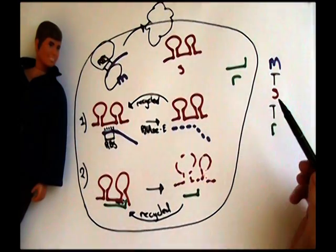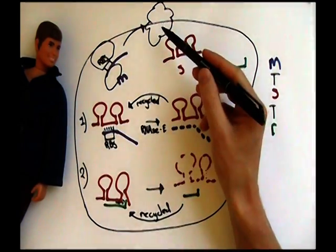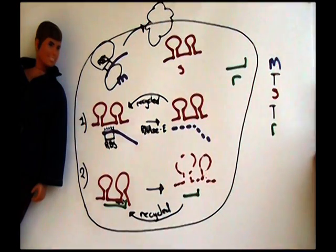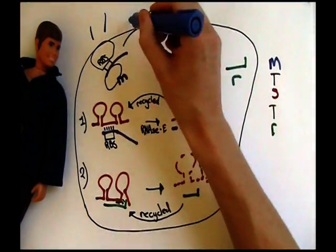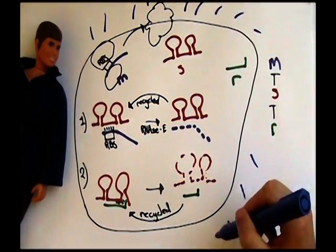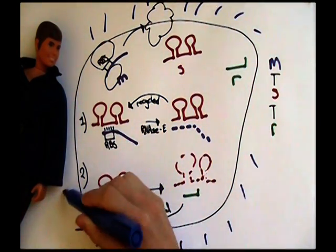If this protein happens to be lacZ, which often is a reporter gene, then the whole cell can turn blue if enough of the messenger RNA is available.